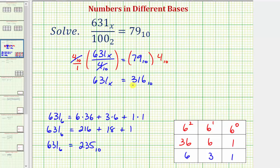So we've discovered that 631 base 6 is equal to 216 plus 18 plus 1 equals 235 base 10. But we want this to be equal to 316 base 10, which means x equals 6 is not the solution to our equation. And because 316 is more than 235, the base is going to be greater than 6.